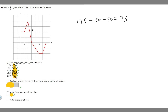Now for part b: on what interval is g increasing? G is increasing when f is above the x-axis, i.e., when f is greater than 0. Looking at the graph, f is above the x-axis from 0 all the way to 15, then goes below and doesn't come back up. So g is increasing on the interval from 0 to 15. G has a maximum value at x equals 15, where g equals 175 — the greatest value we calculated.